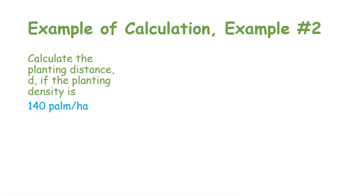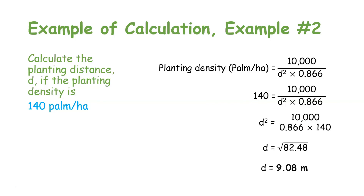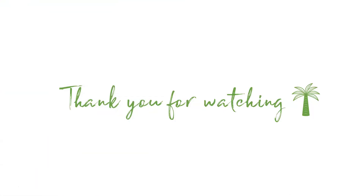In another example, given the planting density is 140 palms per hectare, you need to calculate the planting distance d. Using the same equation, the distance between oil palm trees is 9.08 meters if the planting density is 140 palms per hectare. I hope this tutorial helps — thank you for watching and see you in the next video.